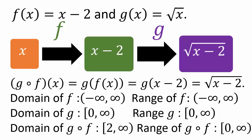It's very important to understand the notation g with a little circle f — g composite f. f is the function you apply first, and then you put that output into the g function. That's what the composite function is all about.